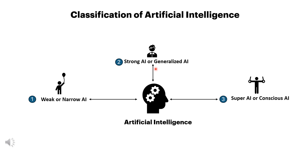Strong AI or generalized AI is AI that can interact and operate across a wide variety of independent and unrelated tasks. Achieving general AI involves creating a system that can comprehend, learn, and adapt to any intellectual task that a human being can. For example, an AGI system could learn how to play chess, write a poem, and diagnose a disease.